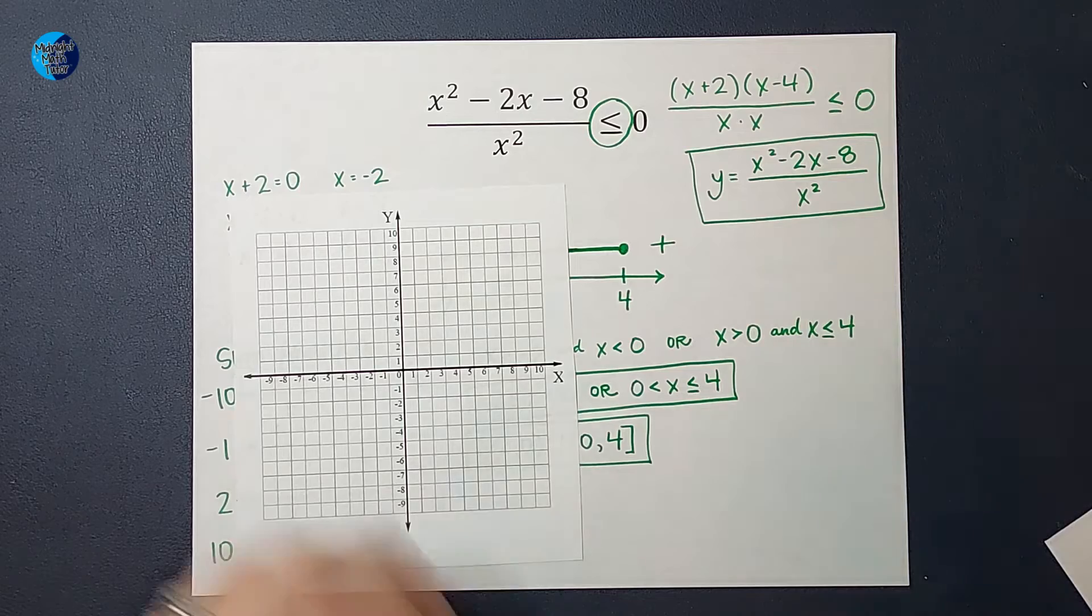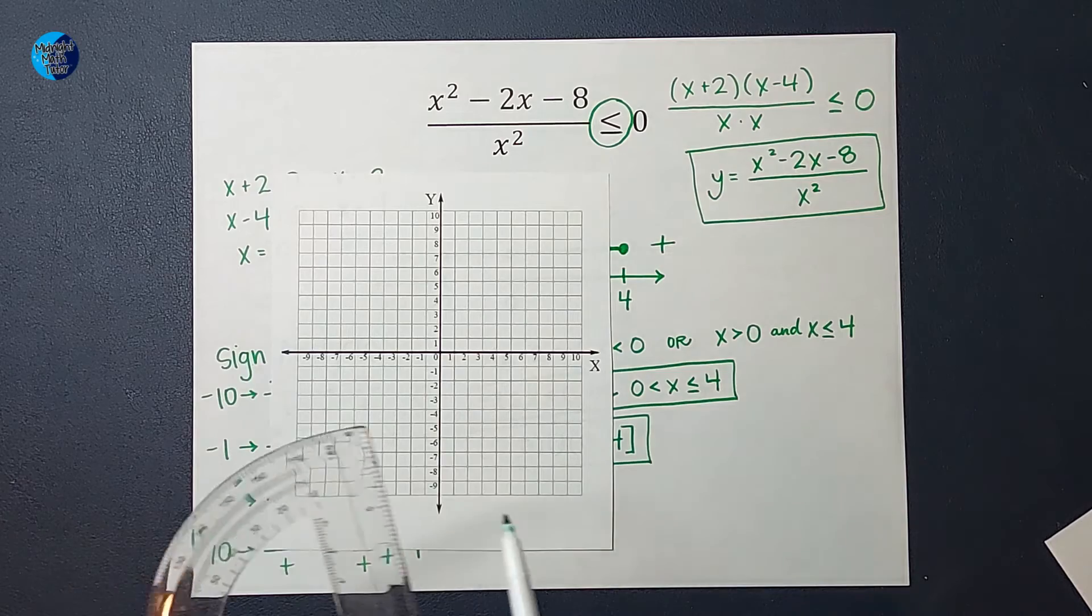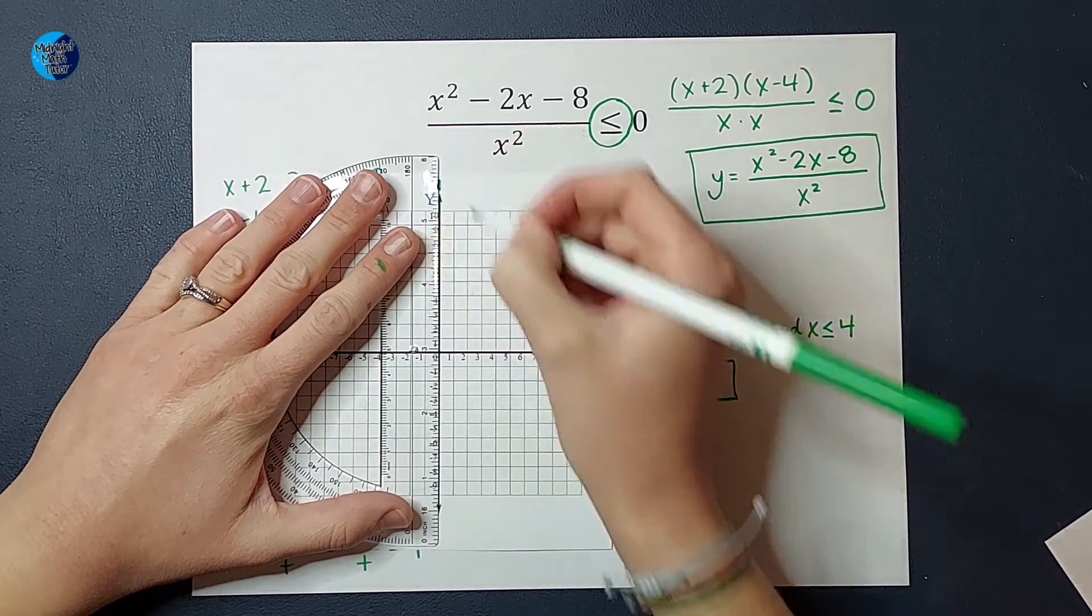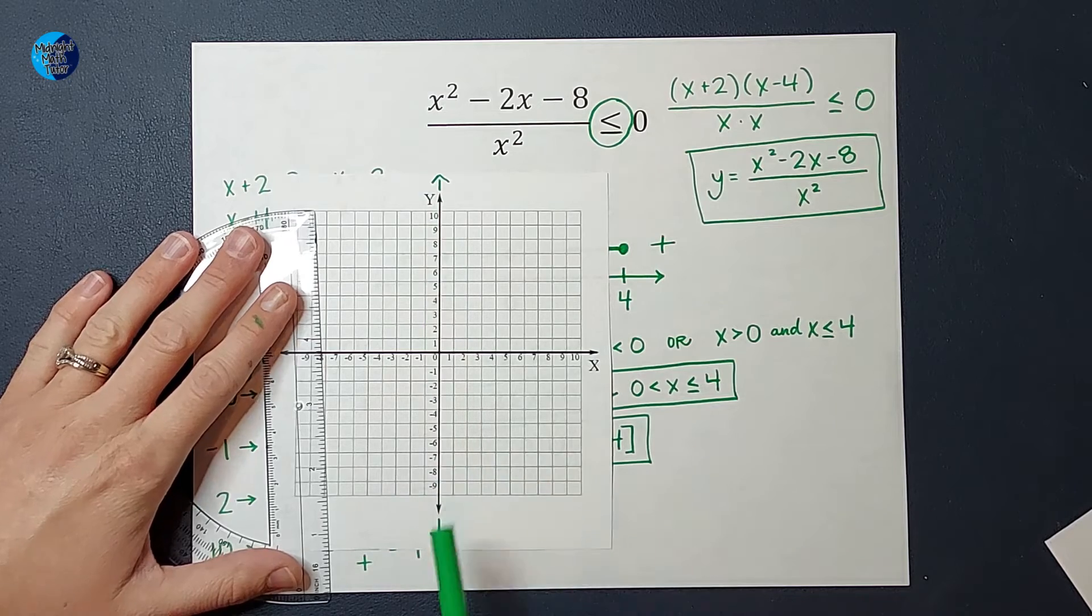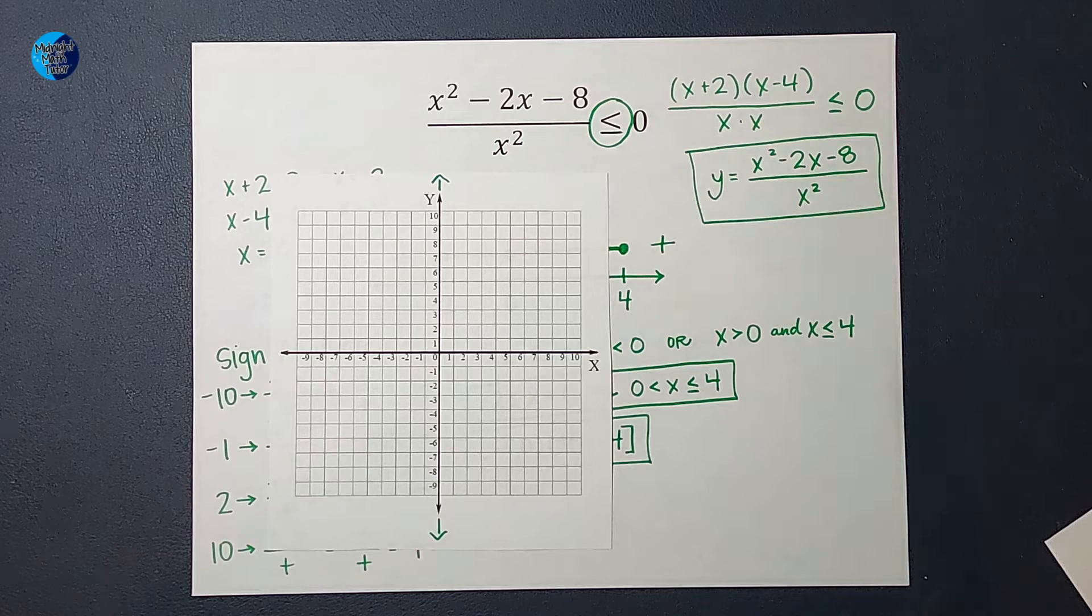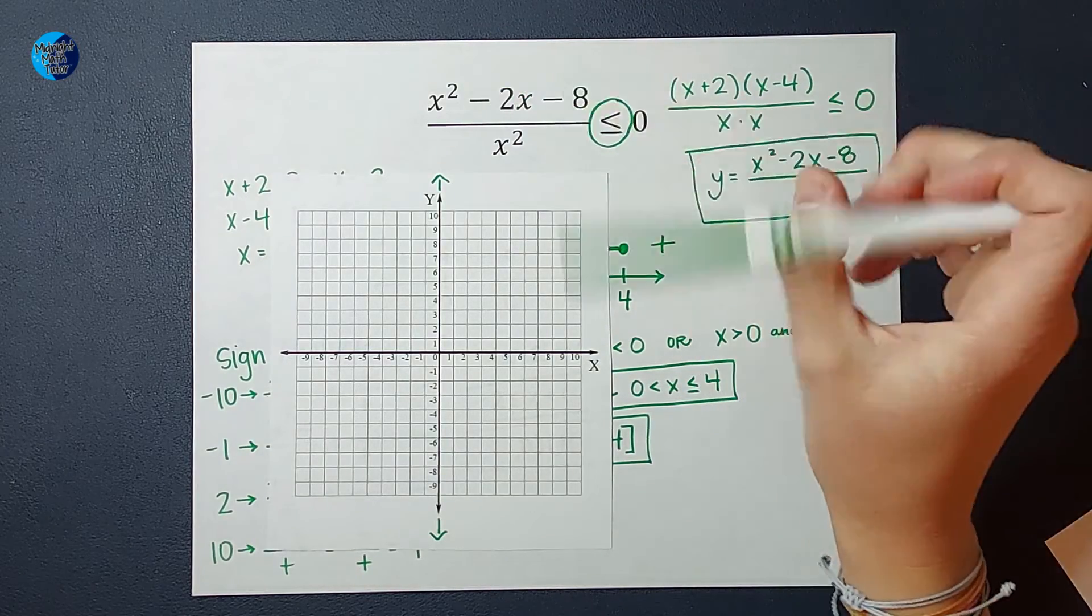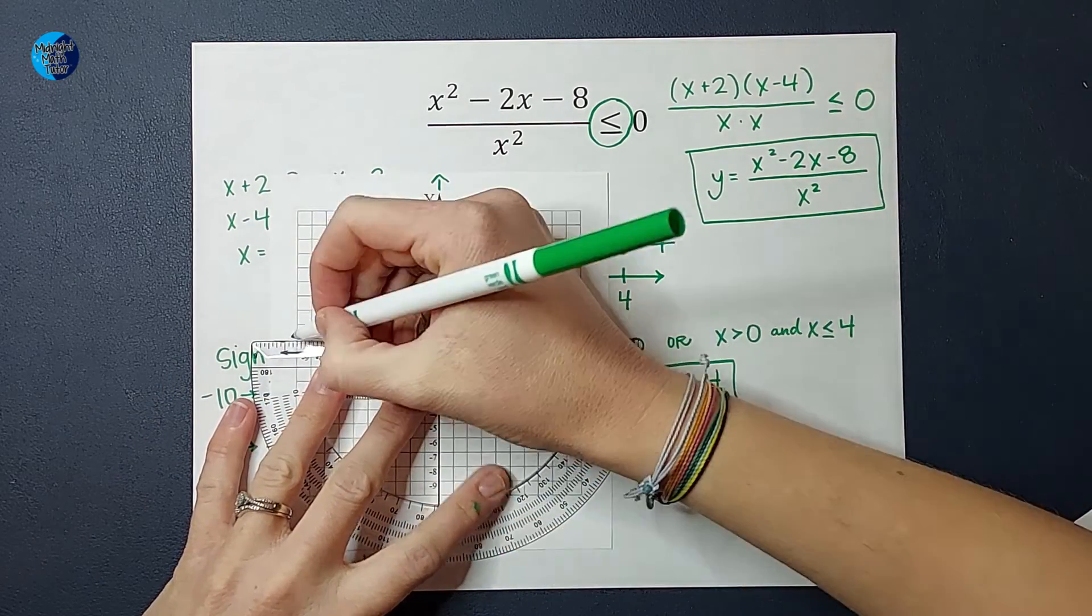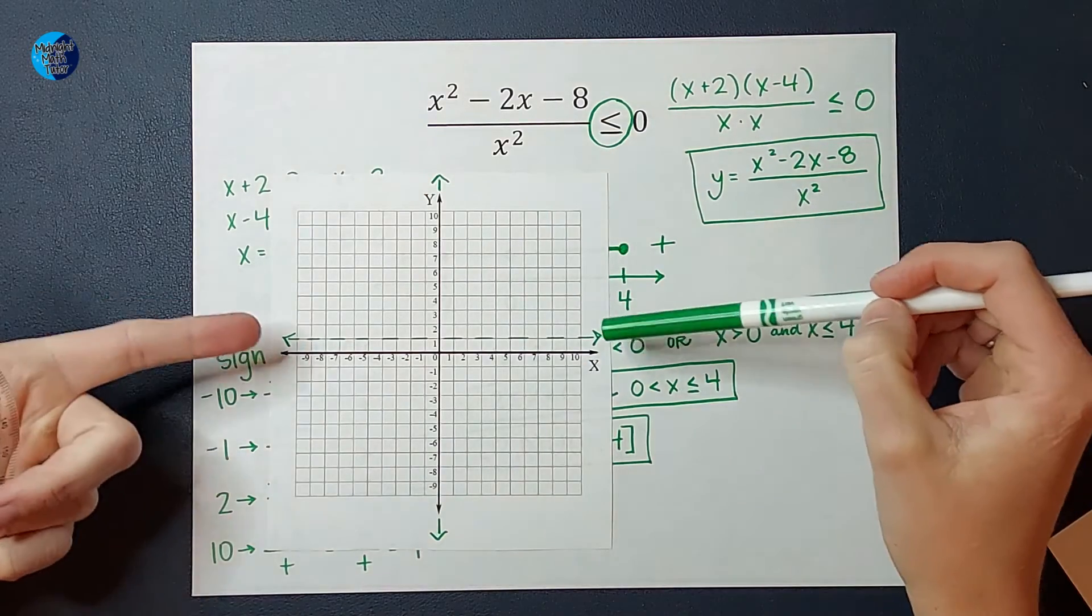But if I were to graph this, the first thing I would do would be to find my vertical asymptotes by setting the denominator equal to 0. And I would figure out that I have a vertical asymptote at 0. I'm not going to draw lines all the way down that because they're kind of hard to see. But just know there is a vertical asymptote at 0. The next thing I would do would I... Let me find my words. I would then look at my degrees to figure out that I have a horizontal asymptote at 1. So there is my horizontal asymptote at 1.